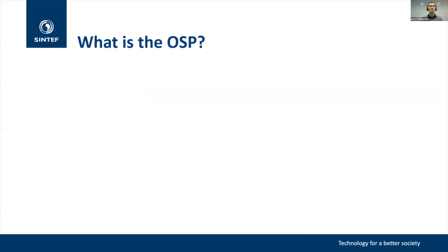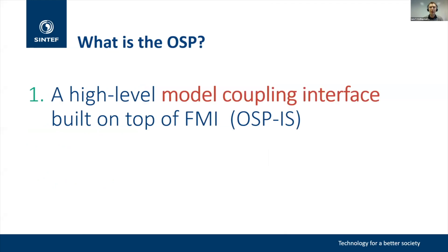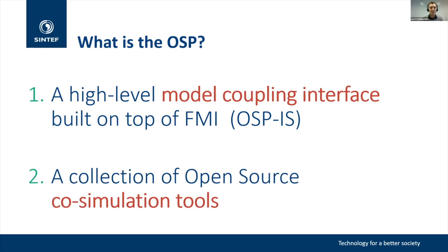The OSP consists of two things. First, it consists of a high-level model coupling interface built on top of the FMI, called the OSP Interface Specification, or OSP-IS. This adds an additional layer of semantic model description on top of the technical description that FMI provides. The second part is a collection of open source co-simulation tools. The main points are that they support the OSP Interface Specification and are completely free to use for anyone.